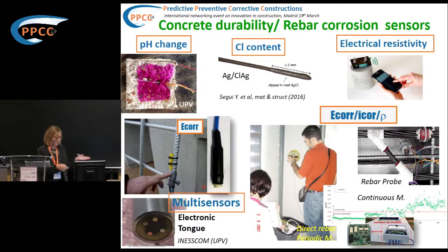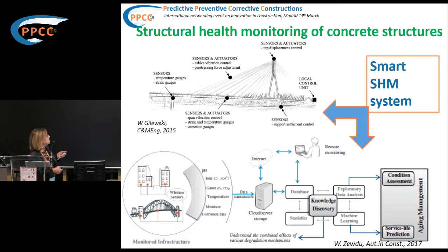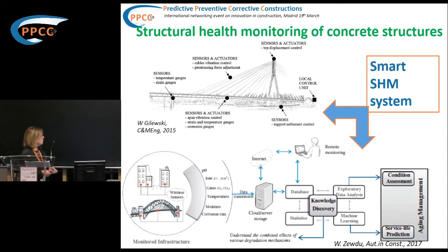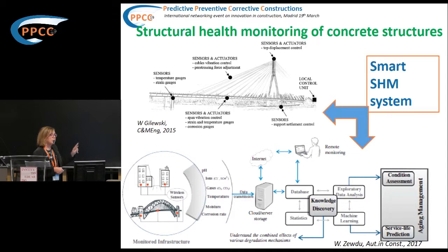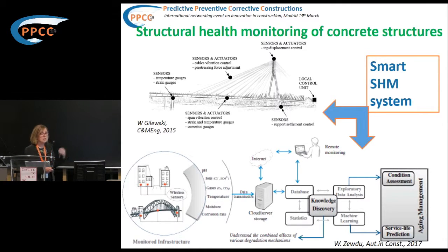We can have examples of this in other presentations. For a bridge, sensors can be introduced at specific and critical points, and possibly actuators, to make corrections if the structure is under risk. For bridges or buildings with durability problems due to aggressive environments, we can measure all relevant parameters — pH, chloride, corrosion performance — wirelessly or by direct measurement. In any case, the resulting database can be analyzed, an assessment made, and a continuous service life prediction performed.